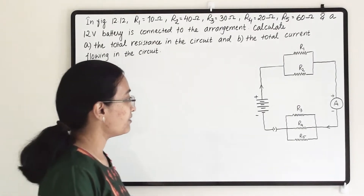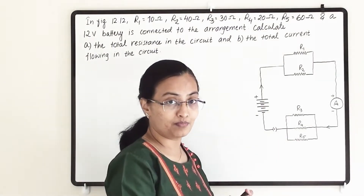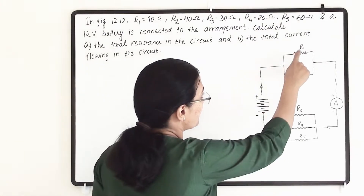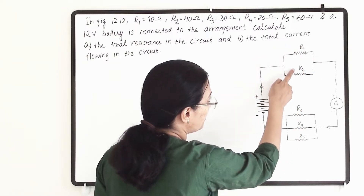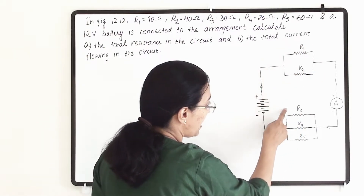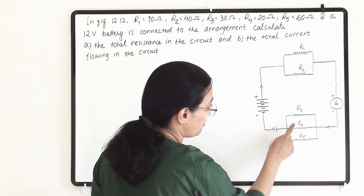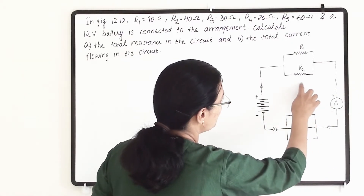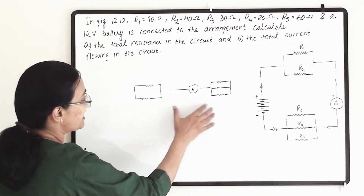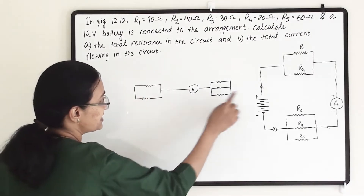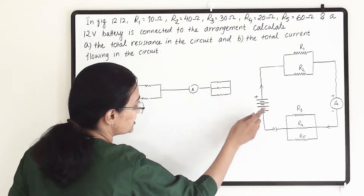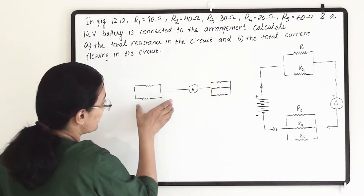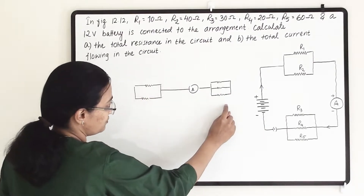First of all we have to identify what resistors are in parallel and what resistors are in series connection. It is easy to identify that R1 and R2 are in parallel connection with each other, and R3, R4, and R5 are in parallel connection with each other. But when you open the loop, you can see that the R1-R2 unit and the R3-R4-R5 unit are in series connection with each other.